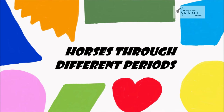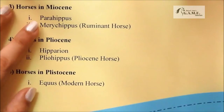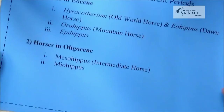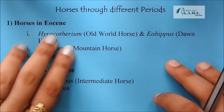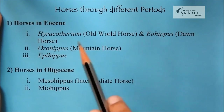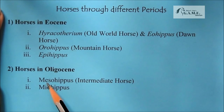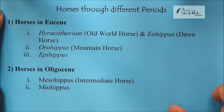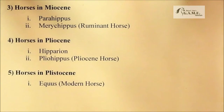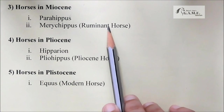Now let's look at horses through different periods, going from Eocene through Oligocene, Miocene, Pliocene, and Pleistocene. In the Eocene we have Hyracotherium (old world horse), Eohippus (dawn horse), Orohippus (mountain horse), and Epihippus. In the Oligocene we have Mesohippus (also called intermediate horse) and Miohippus.